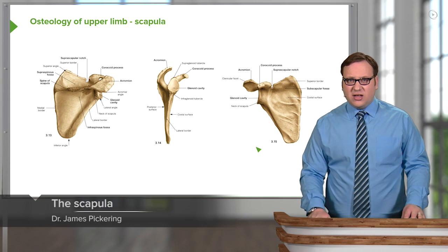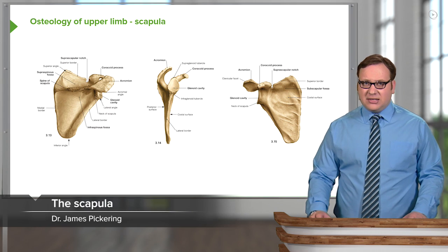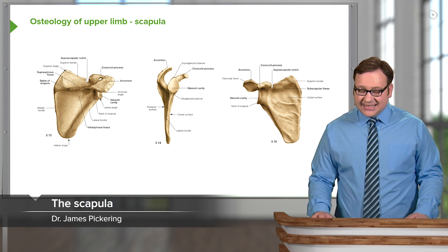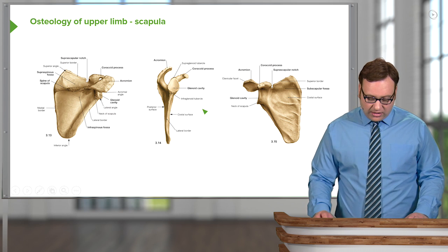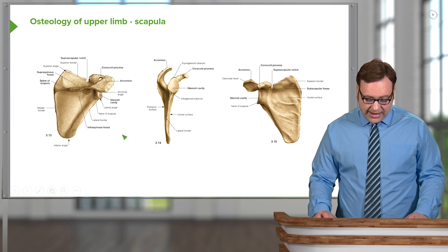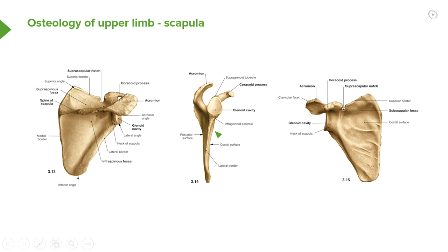Moving on to the scapula, it is connected to the sternum by way of the clavicle. We can see here numerous views of the scapula: a posterior view, a lateral view in the middle picture, and an anterior view on this side of the screen.